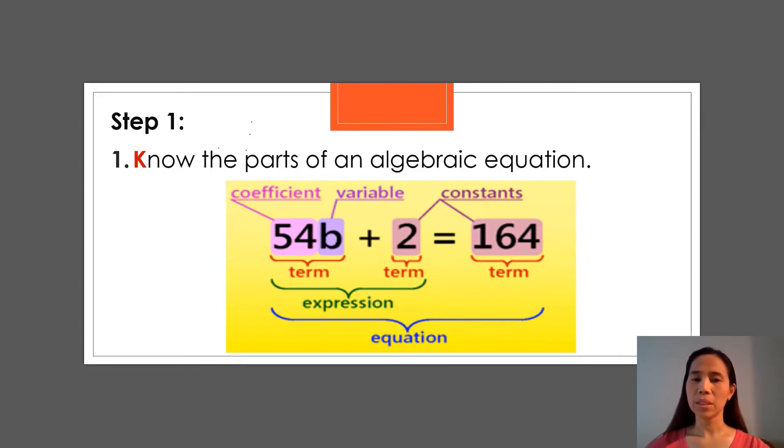So this one is called coefficient. Here the b is the variable. The 54 is the coefficient. And 2 and 164 are constants. They are numbers without the variable.